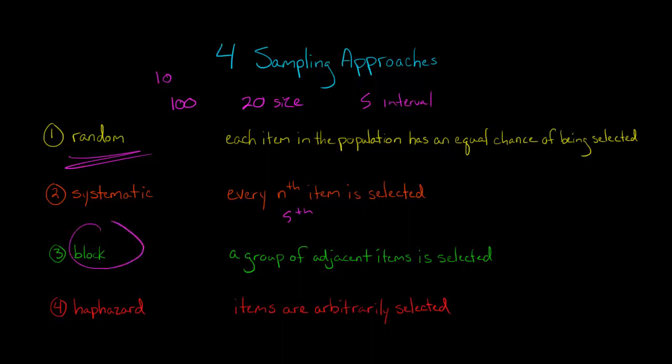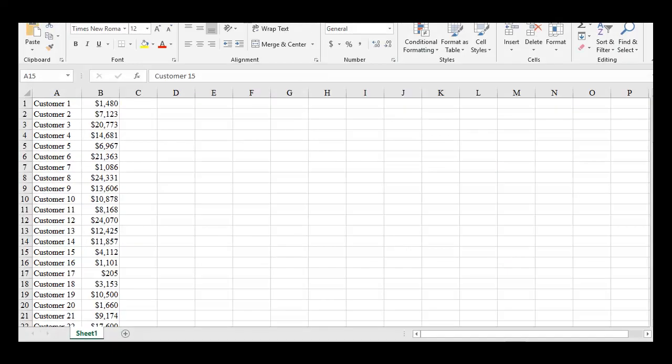Now, block sampling is we just take a group that's all together. So let's go back to our example here. So let's just say we want a sample size of 15. We're just going to take the first 15 customers from the population. That's our sample right there.